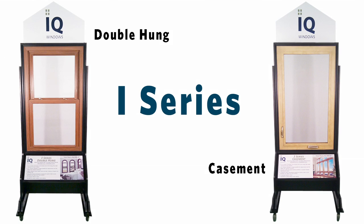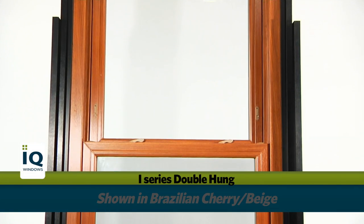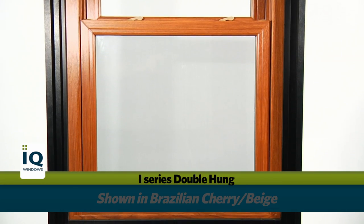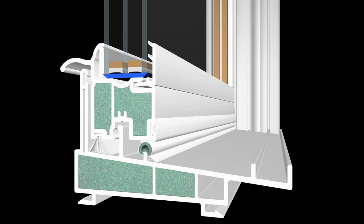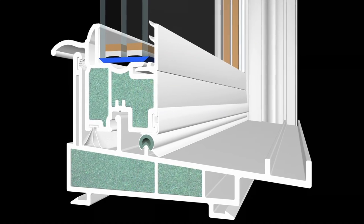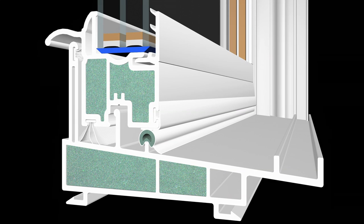The beauty of the i-Series from IQ Windows goes well beyond its detailed architectural lines and beautiful looks. Inside the i-Series lies an engineering masterpiece. The master frame and sash contain comfort foam, an injected green R5 expanding polyurethane foam that further improves the thermal efficiency of the window.